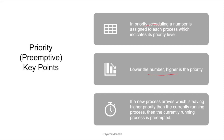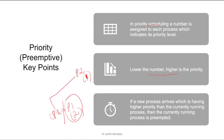Now here is how preemptive priority works. If the CPU is executing any process — let us consider its priority is 2 — and while the CPU is executing this process, at some particular time another process P2 arrives, then its priority will be compared with the presently working process priority. If the priority of this new process is higher, meaning its rank is 1, then the CPU will stop executing the current process and the CPU will be assigned to the new process. That is why it is called preemptive.